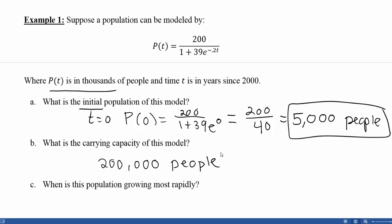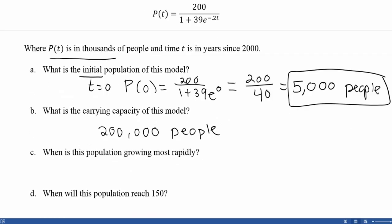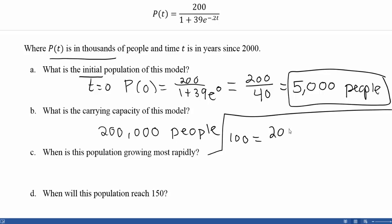Part C: When is this population growing most rapidly? We said the population grows most rapidly at half the carrying capacity. So we set P of T equal to exactly half of 200, which is 100, and solve for T — that is, when does our model reach 100?